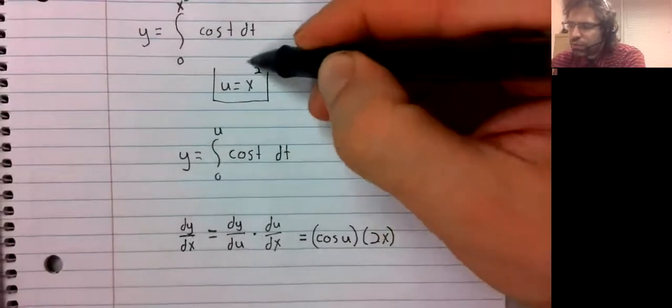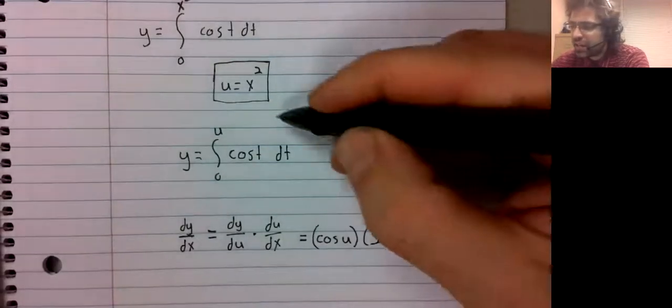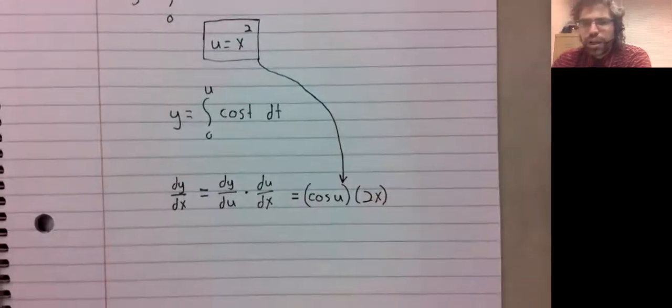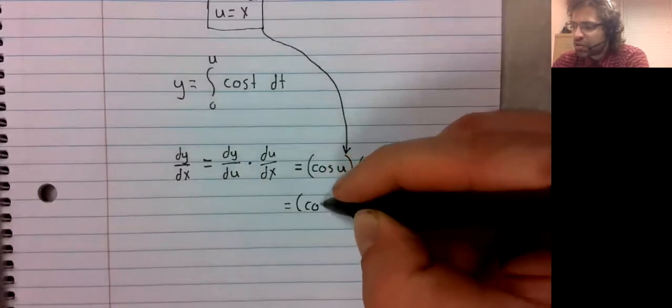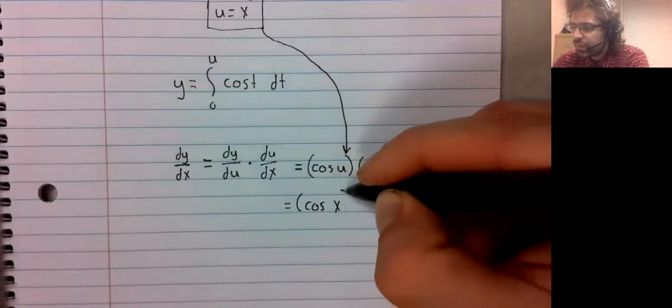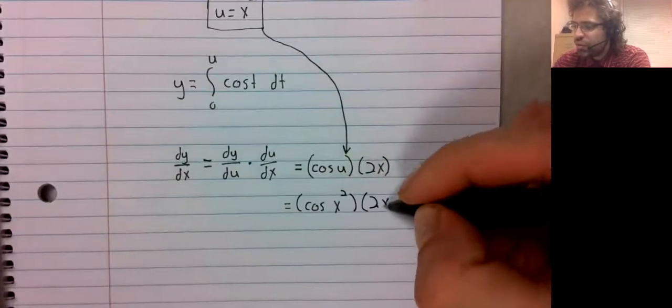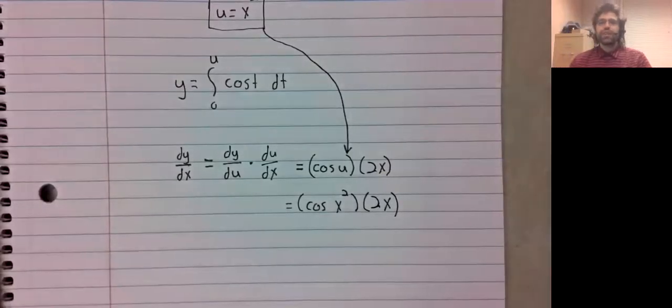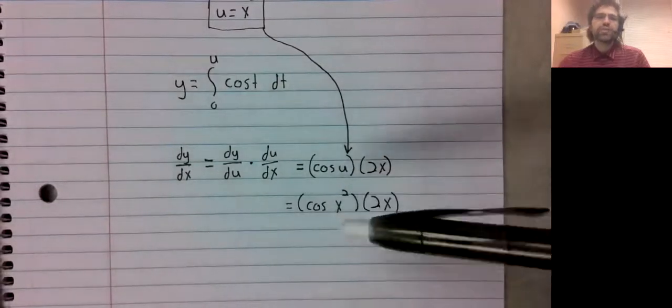We don't actually care about u. It's a completely fake variable that I created so I could use the fundamental theorem. I certainly don't want it in my answer. Well, fortunately, u is easily gotten rid of because we know that u is x squared.